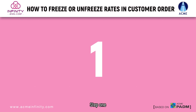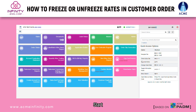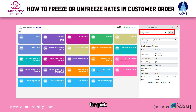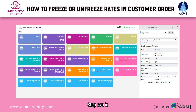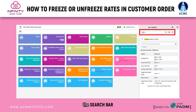Step 1: Start by navigating to the home screen. Locate the search bar for quick access. Step 2: In the search bar, type 'unfreeze rate of order' and hit search.